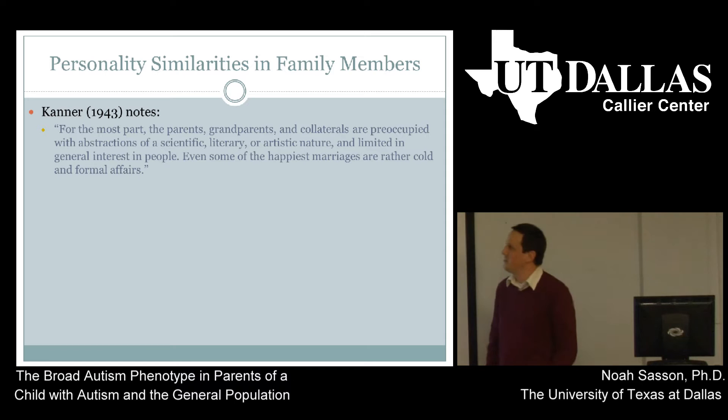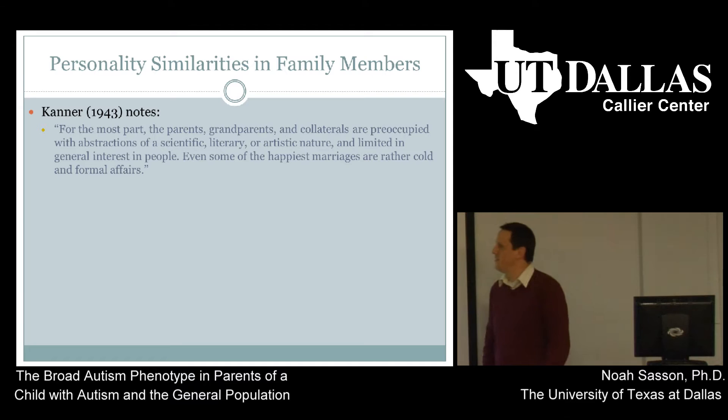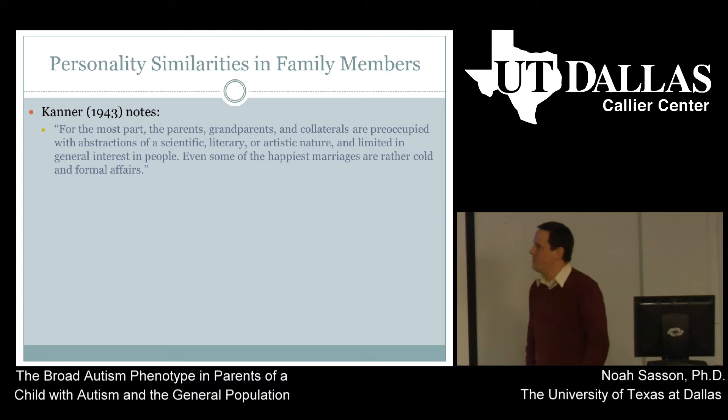In that 1943 paper, Kanner actually talks about the broad autism phenotype, although it wasn't called that at the time. He was noting these characteristic personality similarities in family members. In that paper he writes: 'For the most part, the parents, grandparents, and collaterals are preoccupied with abstractions of a scientific, literary, or artistic nature, and limited in general interest in people. Even some of the happiest marriages are rather cold and formal affairs.'